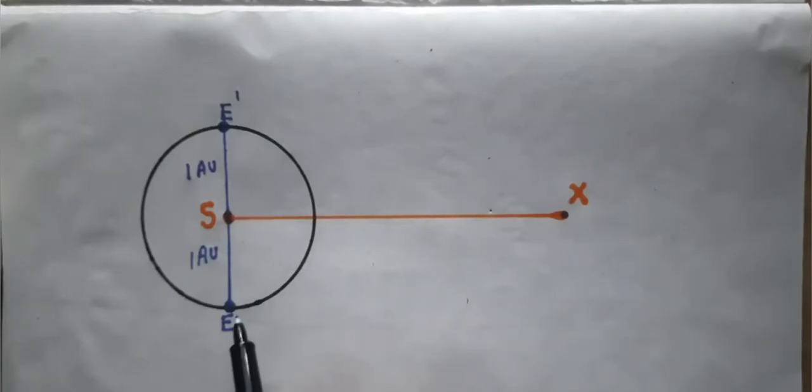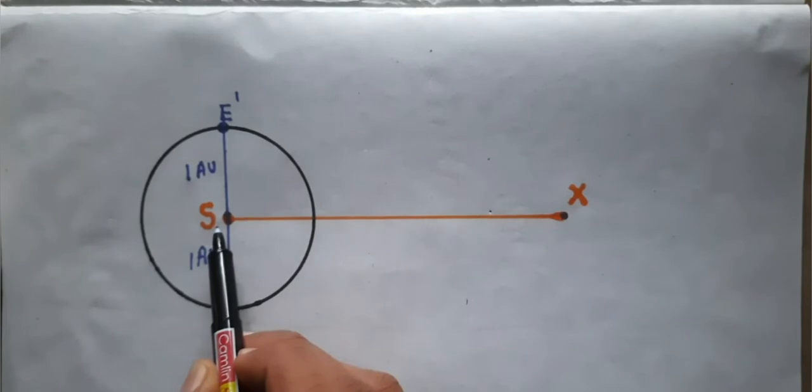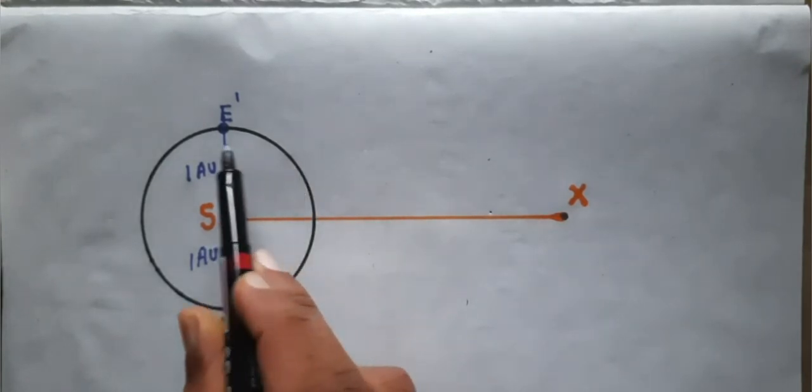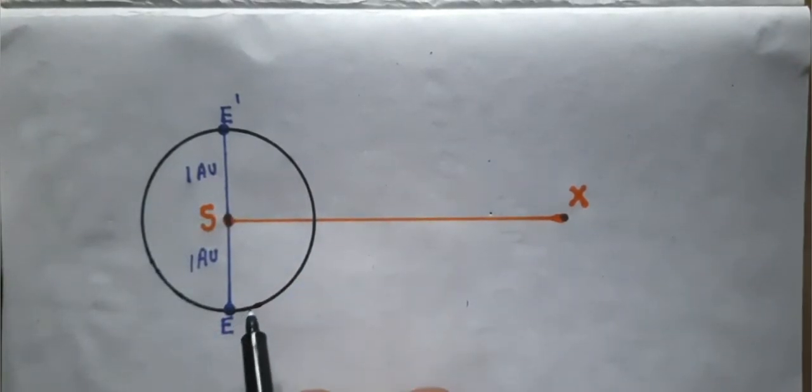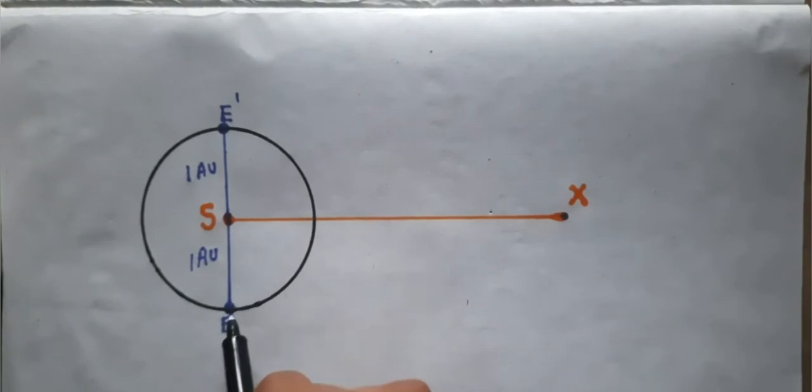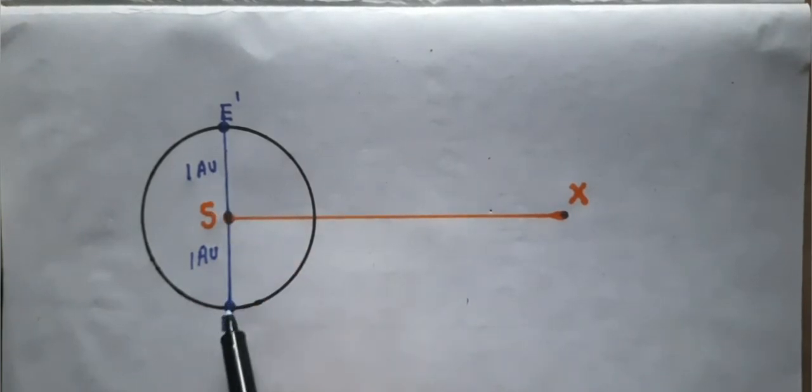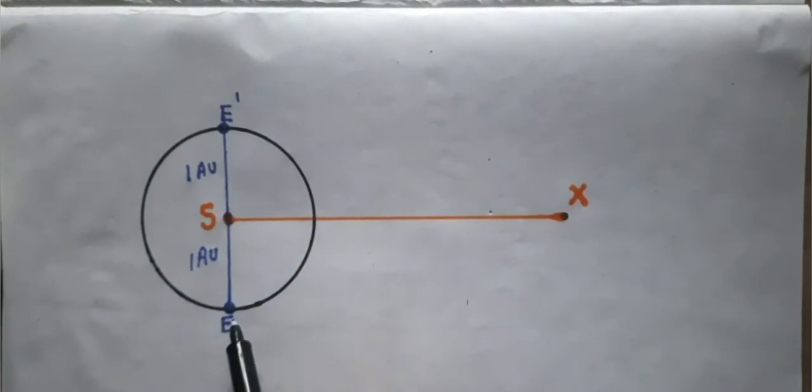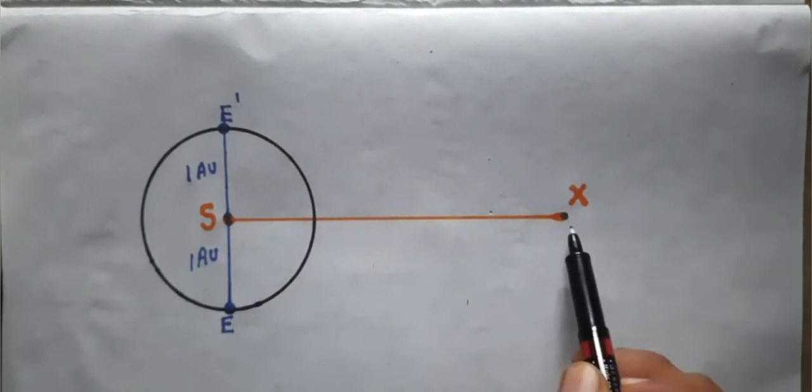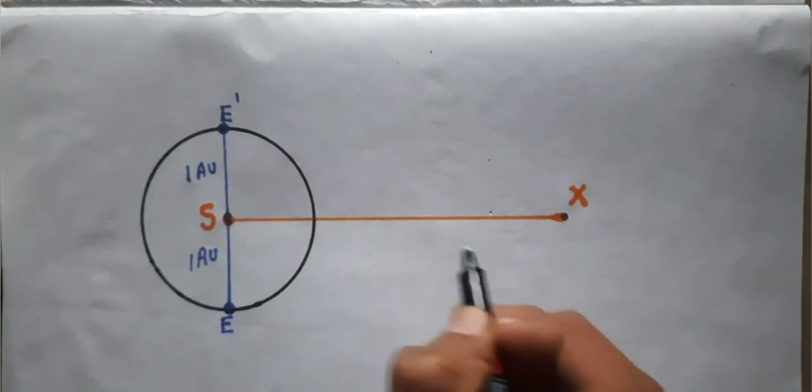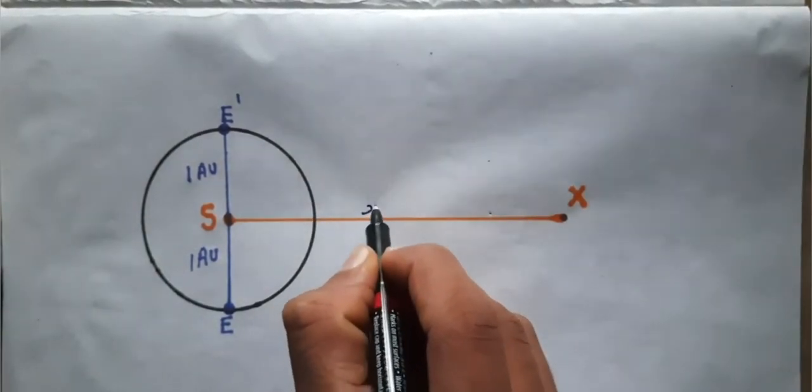Consider this diagram. Here, S is the position of the Sun, and this black line indicates the orbit of Earth around the Sun. E and E' are the positions of Earth in its orbit between a time interval of 6 months. X is the position of the star whose distance has to be measured, and the distance, let it be small x.